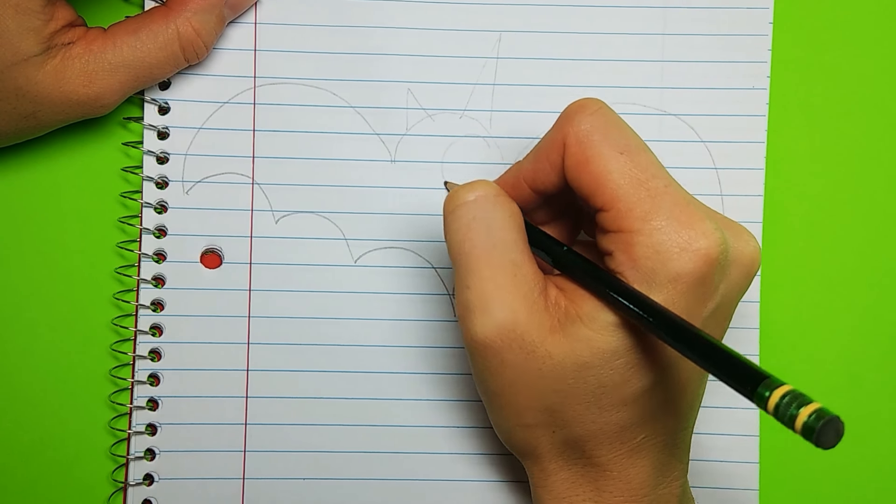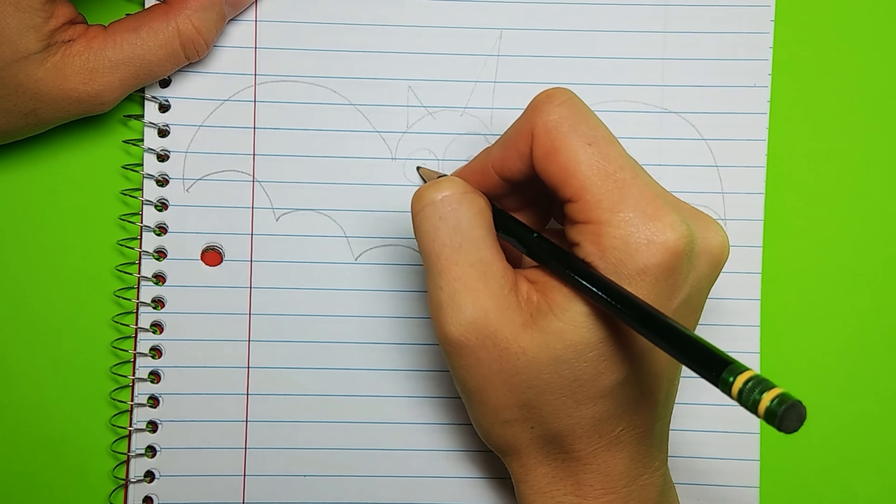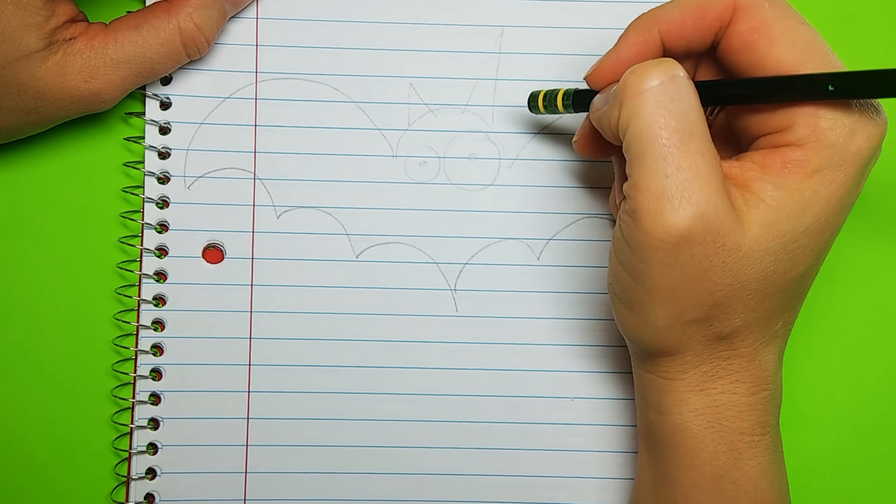I like to make huge googly eyes. So we'll make a huge googly eye, and then I like to make a smaller one just because it looks funny. Funny is good with cartoons.